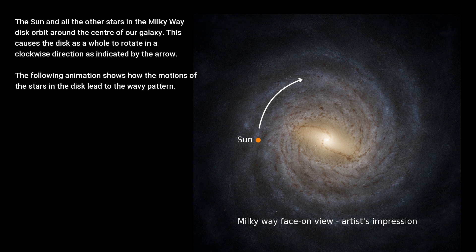The Sun and all the other stars in the Milky Way disk orbit around the center of our galaxy. This causes the disk as a whole to rotate in a clockwise direction as indicated by the arrow.